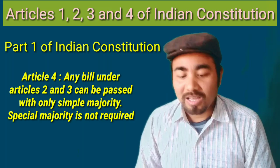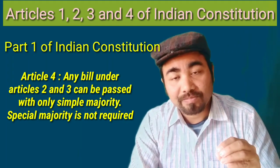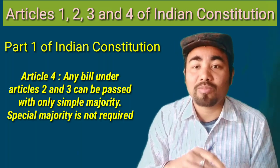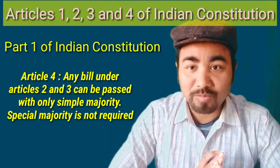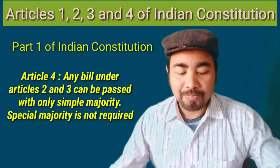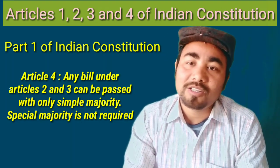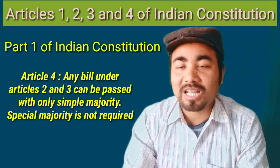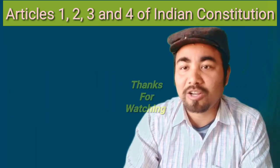So what's going on in the Indian Constitution Part 1? The articles 1, 2, 3, and 4 are the part of the Indian Constitution. That's the overview of Part 1. Please like, share, and comment on the video. Thank you.